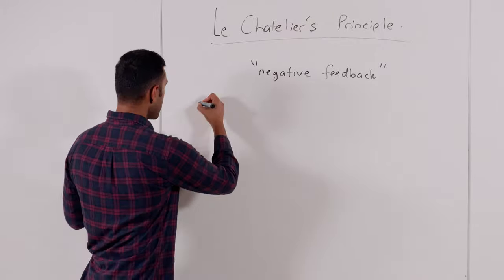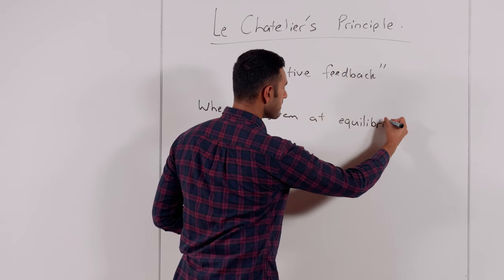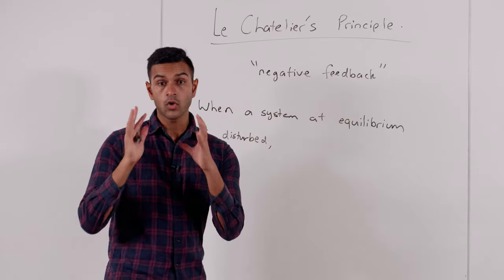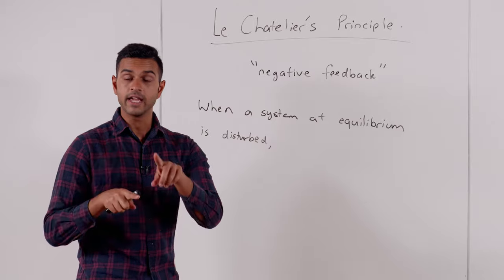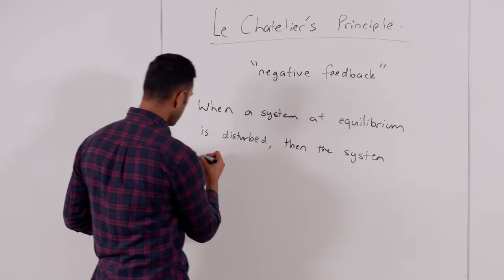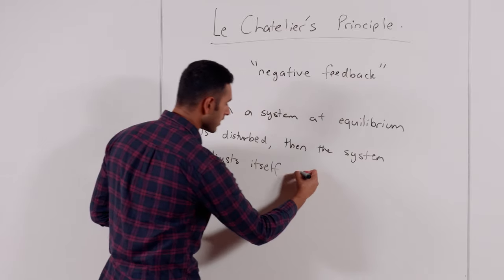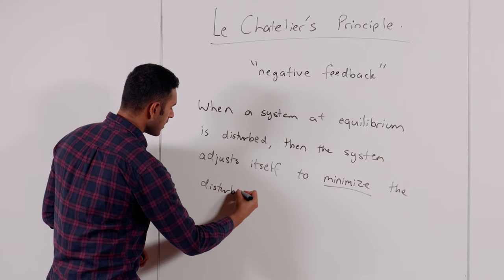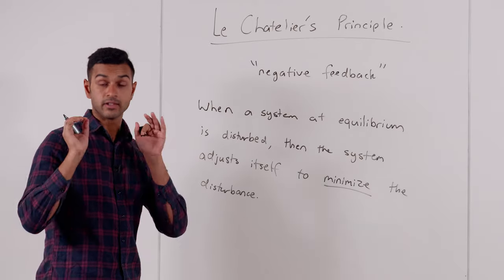Le Chatelier's Principle states: when a system at equilibrium — and it only works at equilibrium — is disturbed, meaning we open the system and make some change to its content, or we change the amount of energy in the system, then the system adjusts itself to minimize the disturbance. This encapsulates the key aspects of what we're going to look at in more detail in reactions.